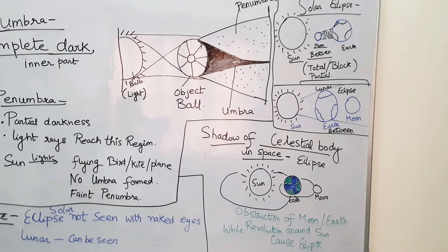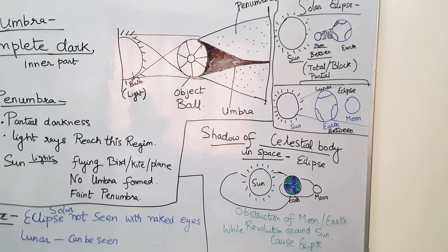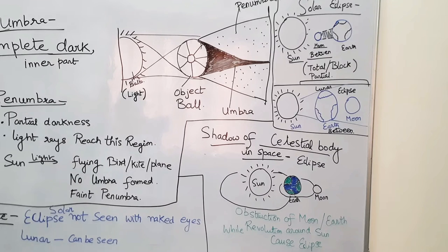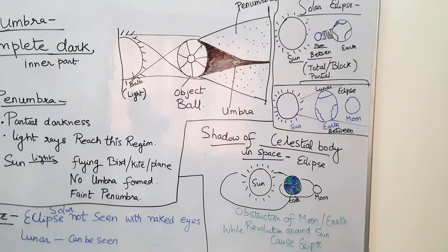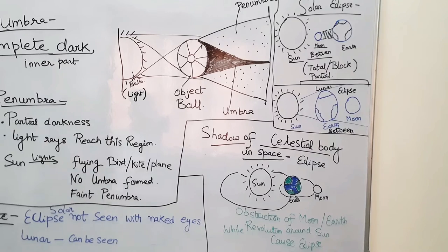A lunar eclipse, as the name suggests, is a moon eclipse. During a lunar eclipse, there is complete darkness on the moon because the earth comes in between the sun and the moon, causing an obstruction of sunlight reaching the moon. The moon will remain dark. Unlike a solar eclipse, a lunar eclipse can be seen with the naked eyes.